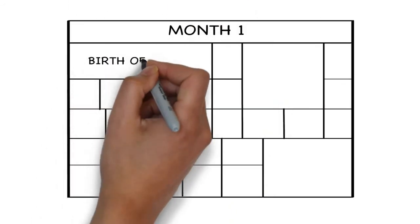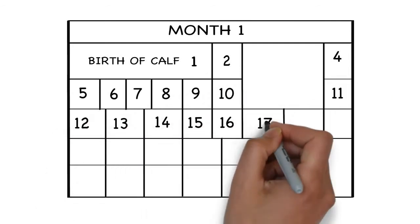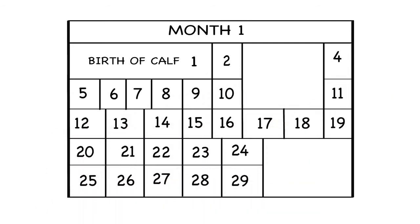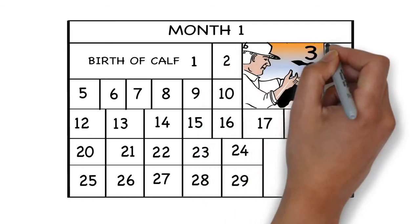All calves were fed raw colostrum within 12 hours after birth, and pasteurized milk was fed to them twice a day thereafter. Calf starter diets and water were offered starting at day 3 of life.